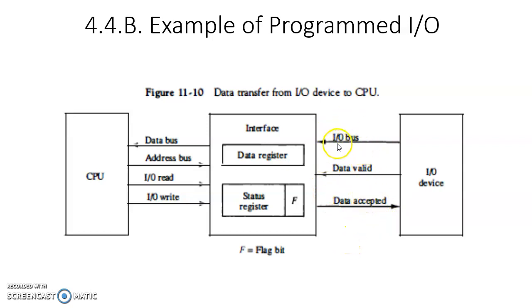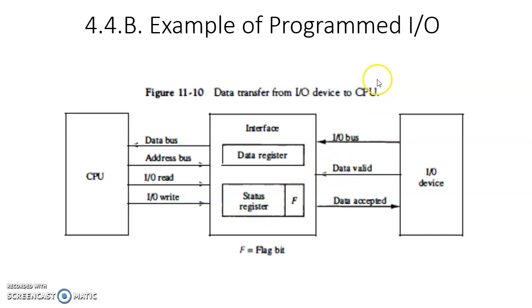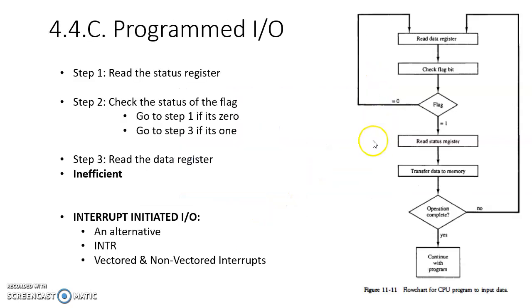The three lines are: one for the data bus, one to indicate whether the data is valid or invalid on the data bus, and the last one is acknowledgement. Now let us look at a program written by the user in the computer to monitor this data transfer. It is a three-step procedure.